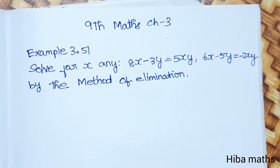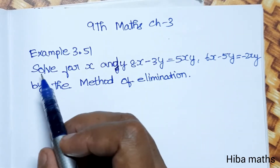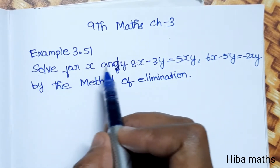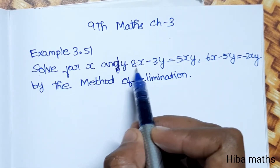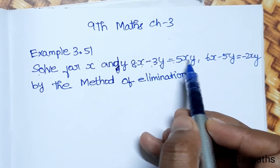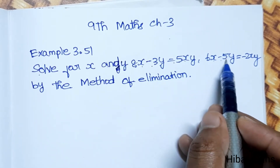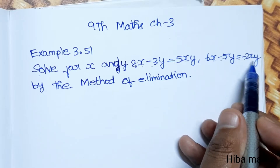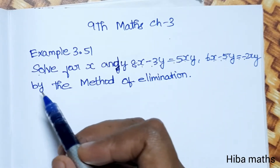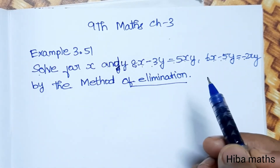Hello students, welcome to Hibamax 9, Standard Max Chapter 3, Example 3.51. Solve for x and y: 8x minus 3y is equal to 5xy, and 6x minus 5y is equal to minus 2xy, by the method of elimination.